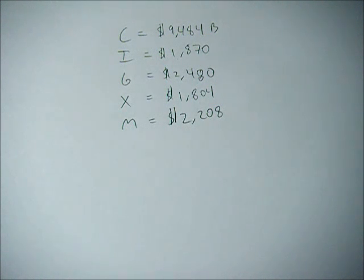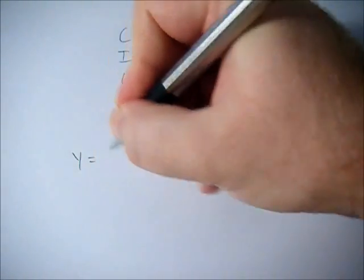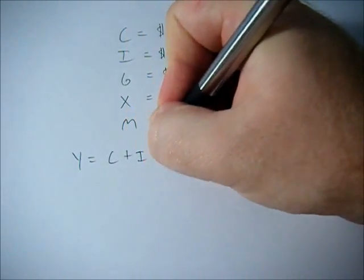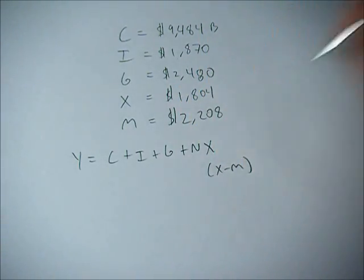So to find what real GDP is, we have to plug these values into our equation. So remember, Y equals C plus I plus G plus NX, and NX is equal to X minus M.